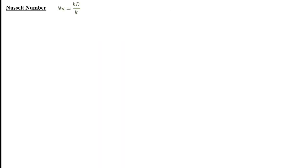Now let's talk about the Nusselt number. Notice that the Nusselt number is defined with a characteristic length — for a flat plate that was L, but here it's D, the diameter. Also in tube flow, we typically define the convective heat transfer coefficient with the local heat flux, so we'd be interested in the local heat flux and the mean temperature of the fluid at some location, or perhaps the tube surface temperature at some location.